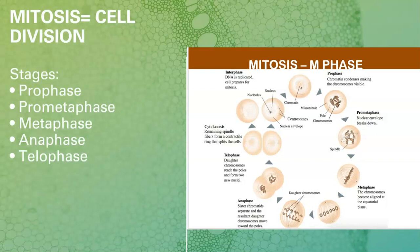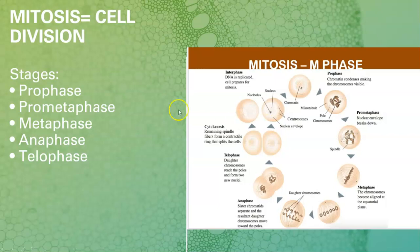Mitosis is cell division — all of your cells in your body go through mitosis of some kind, except for your sex cells, which we'll get to in a moment. You're going to want to focus on all the stages: prophase, prometaphase, metaphase, anaphase, and telophase. You can get most of the information you need from this picture. However, you'll also want to go through the PowerPoint because there will be some quiz questions related to that specific information, but this gives you a general idea of how it works.